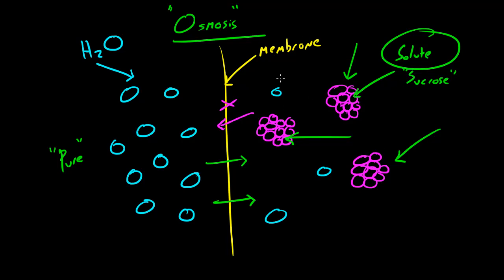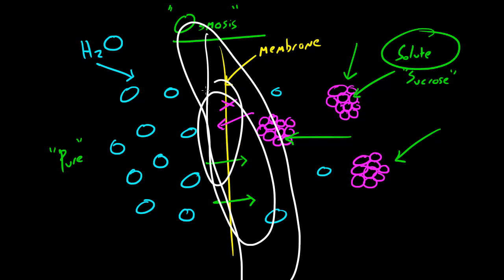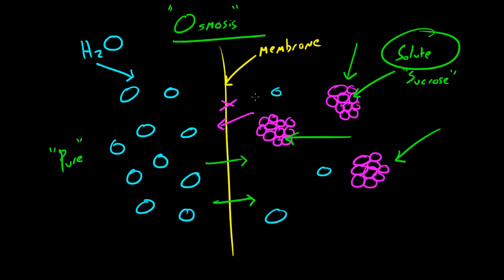Whenever you combine them, you have a solution through a process called osmosis. Now of course, whenever we're looking at cells, instead of a simple membrane, this thing right here would actually be the cell membrane or plasma membrane. But for this demonstration, you don't have to remember all that for right now.